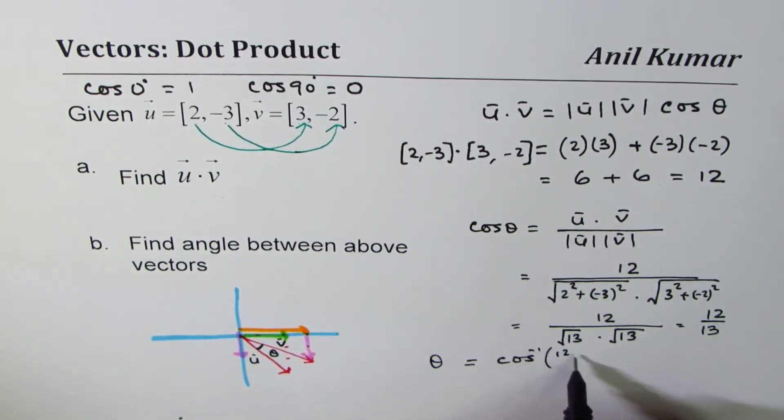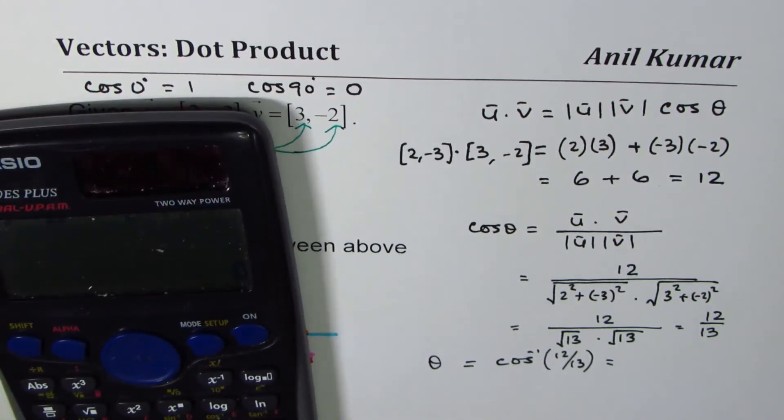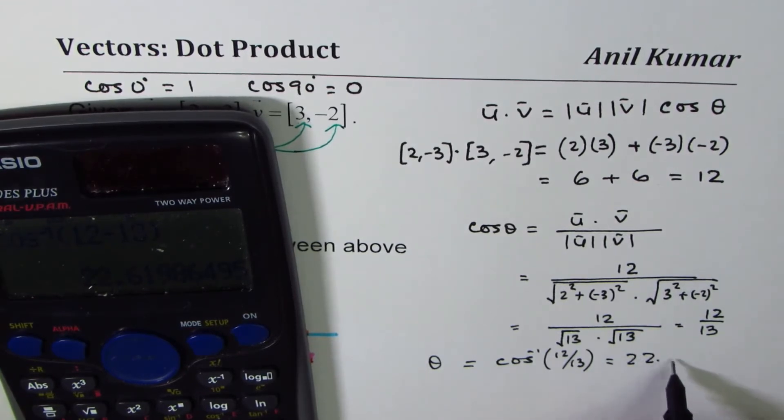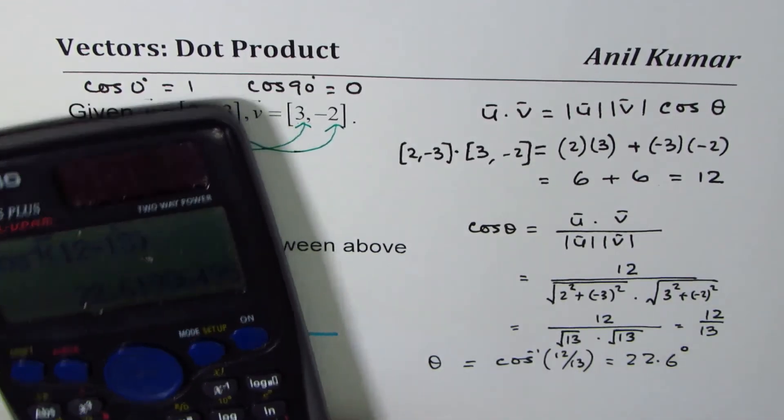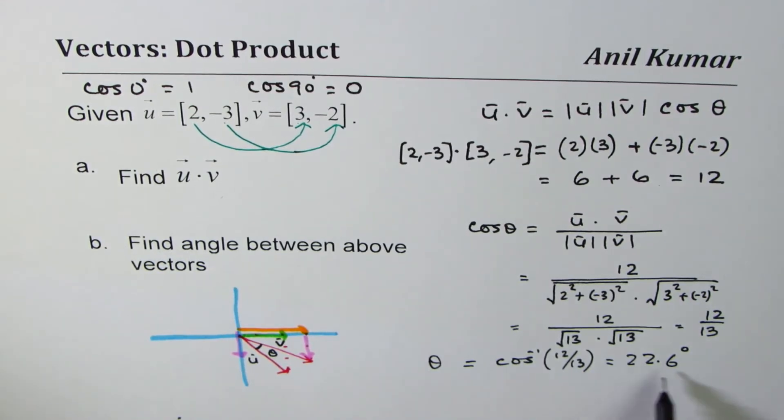So theta is equal to cos inverse of 12 over 13, which is, let's calculate. So it is shift cos inverse 12 divided by 13 bracket close equal to 22.6 degrees.